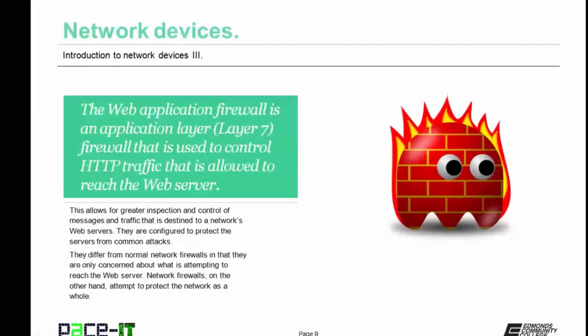The web application firewall is an application layer, or layer 7, firewall used to control HTTP traffic allowed to reach a web server. This allows for greater inspection and control of messages and traffic destined to a network's web servers. They are configured to protect servers from common attacks. They differ from normal network firewalls in that they are only concerned about what is attempting to reach the web server, whereas network firewalls attempt to protect the network as a whole — meaning the web application firewall is much more specialized and allows for more granular control.